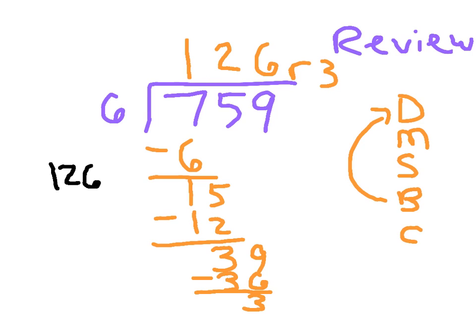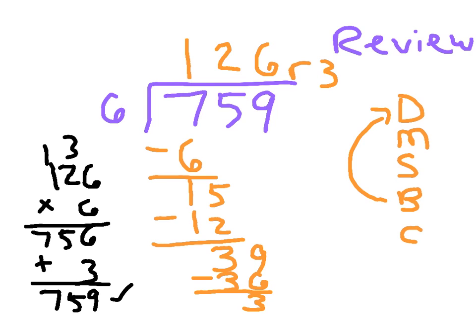It would be one hundred twenty-six times six in parentheses plus three. Now, if I actually did that, meaning evaluate it: twelve and fifteen, five, one, six times one is six plus one is seven, seven hundred fifty-six plus three is seven hundred fifty-nine, and it checks.